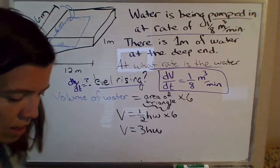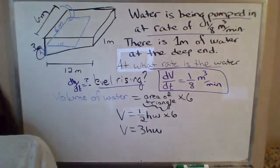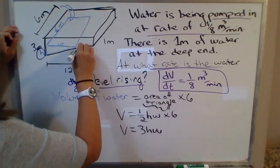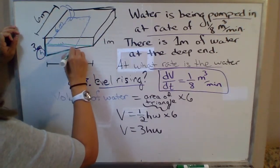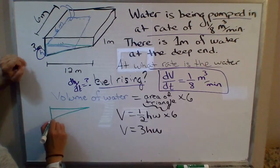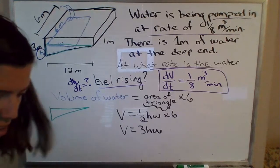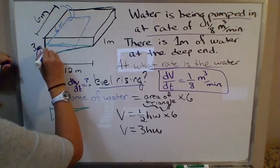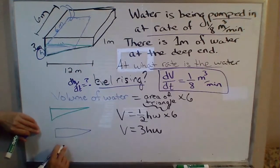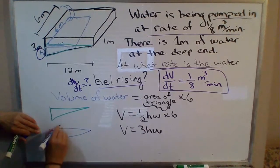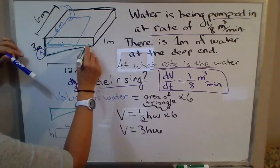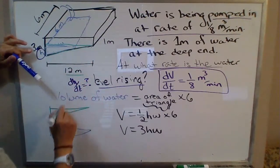So we can actually write an expression in terms of h to replace w using similar triangles. So the similar triangles, let me get another color, I'd like to use green. The similar triangles are this one here, formed by the pool, that one there, and then this triangle where the water actually is.